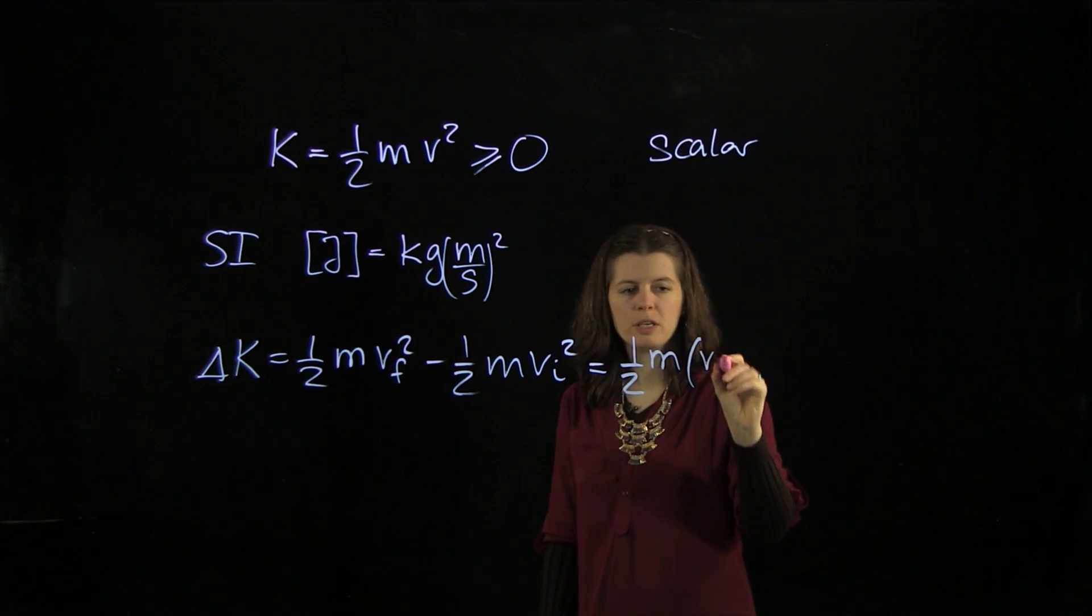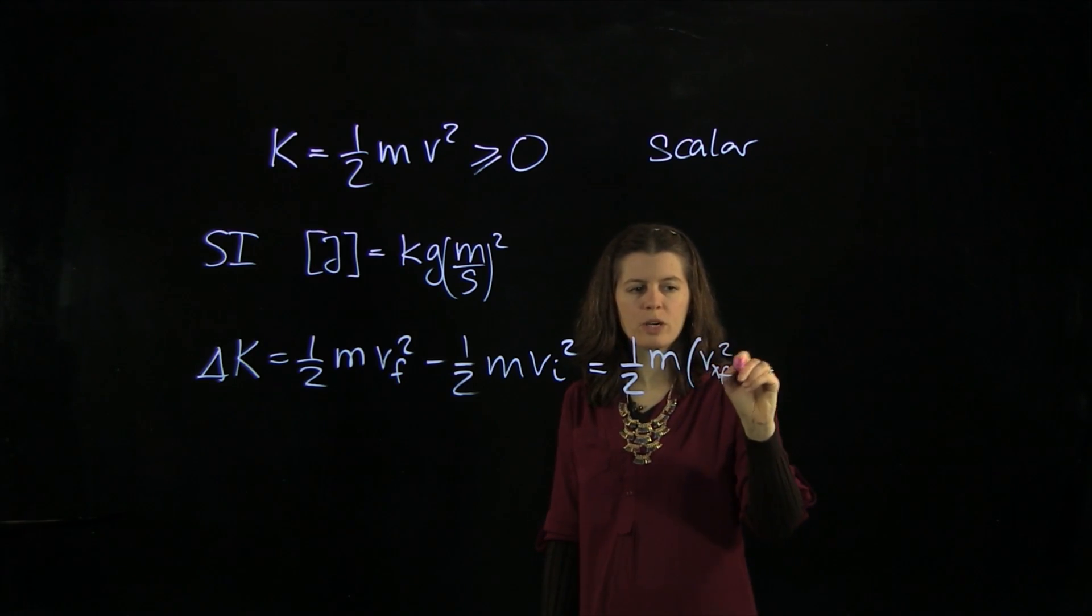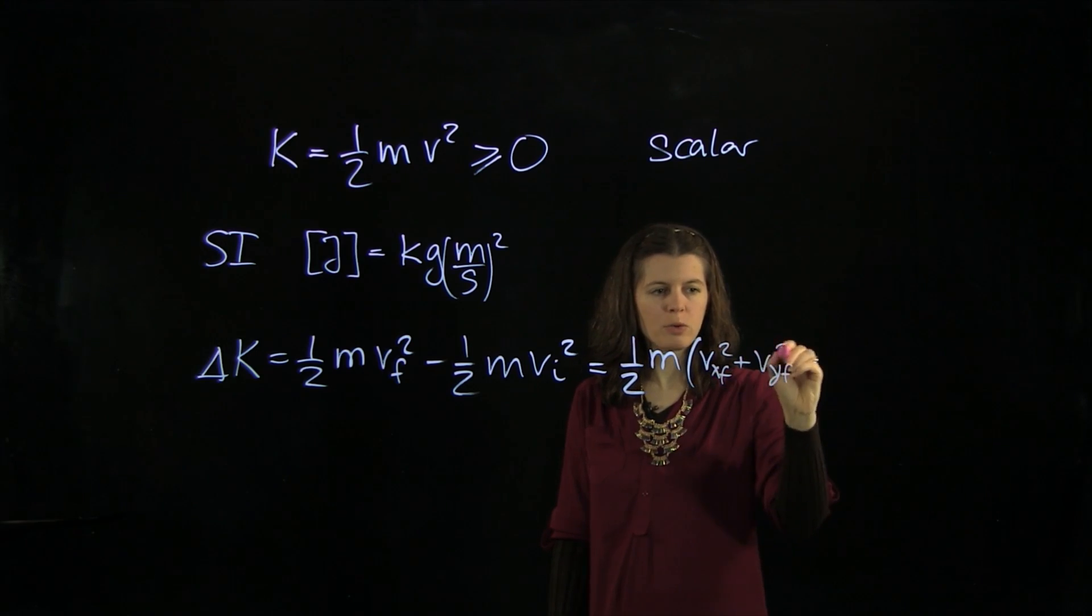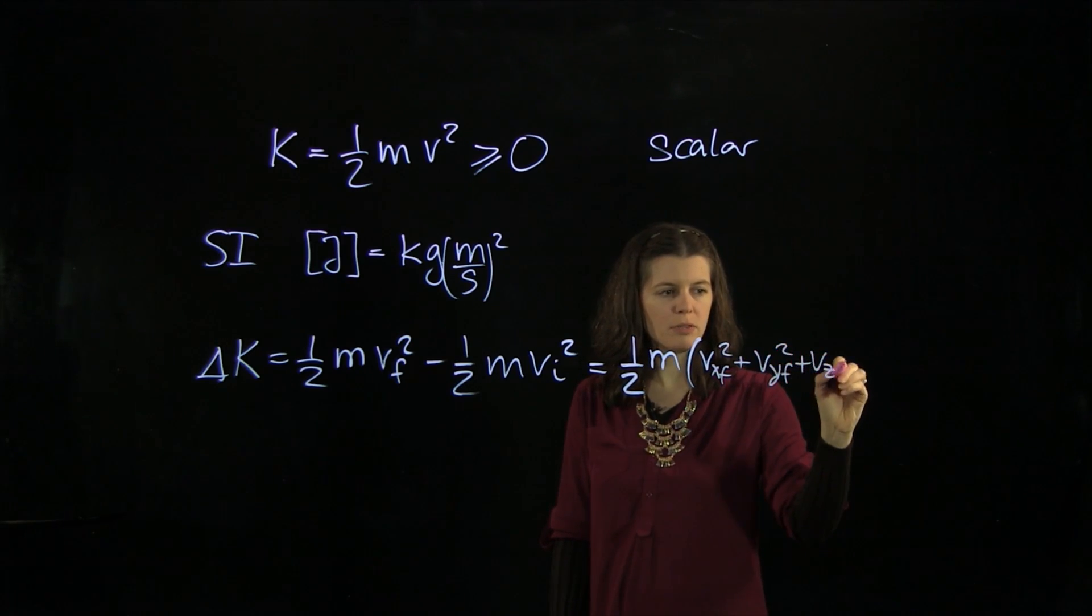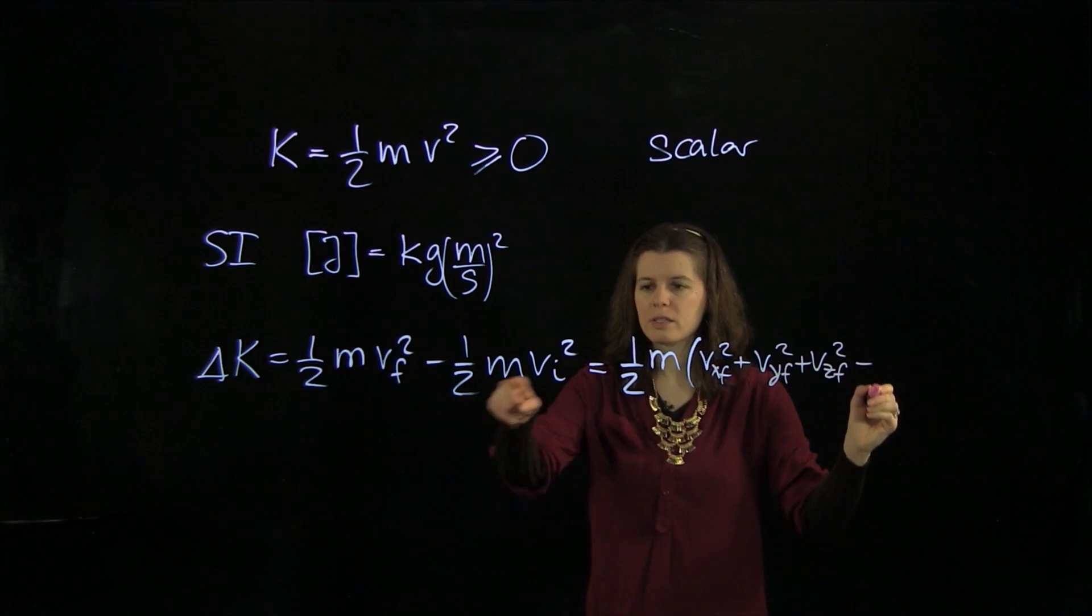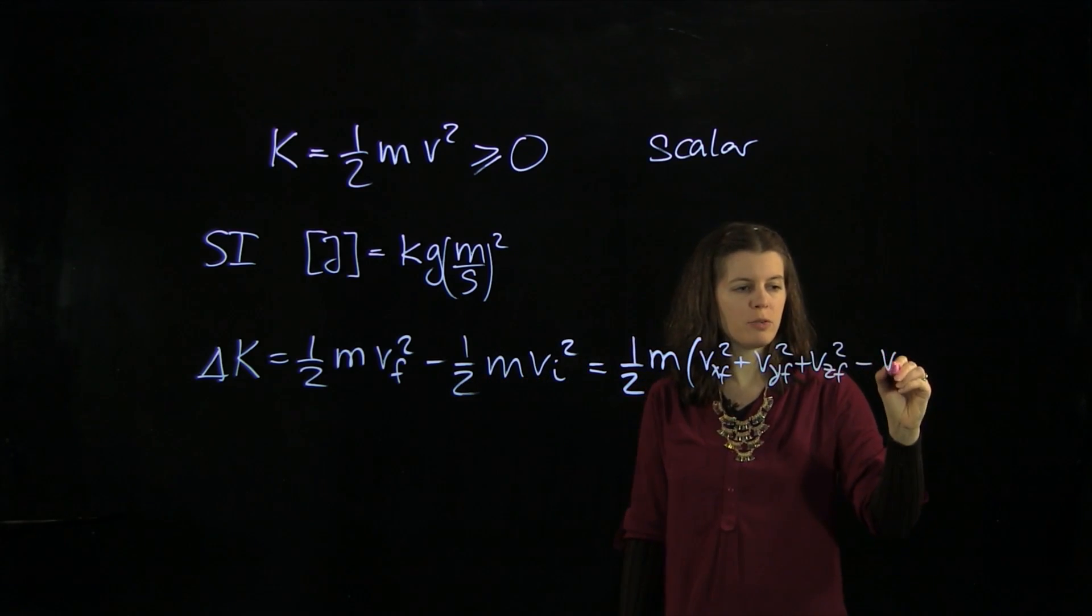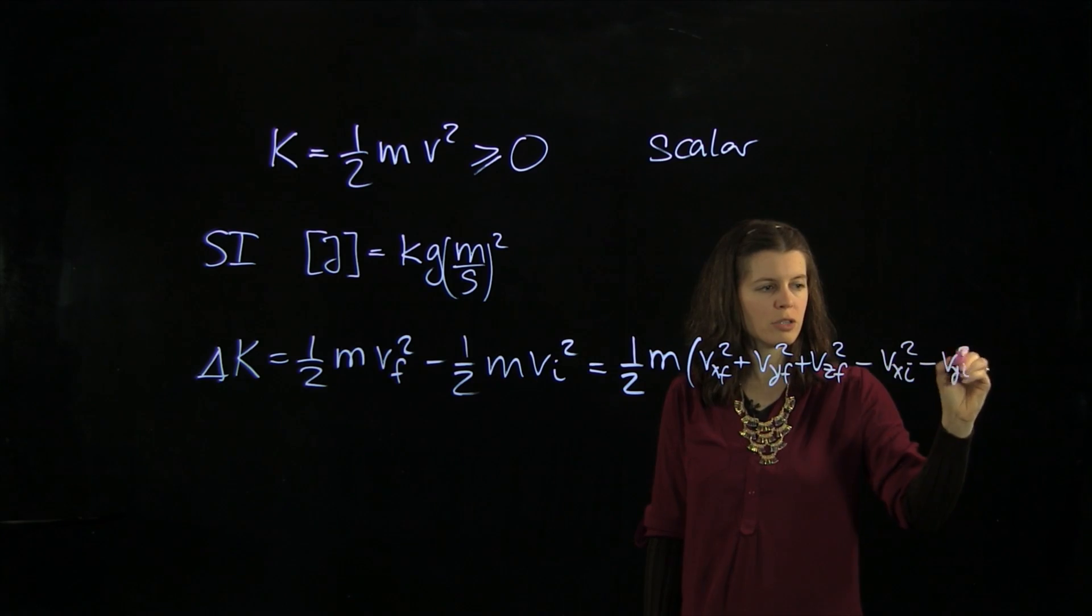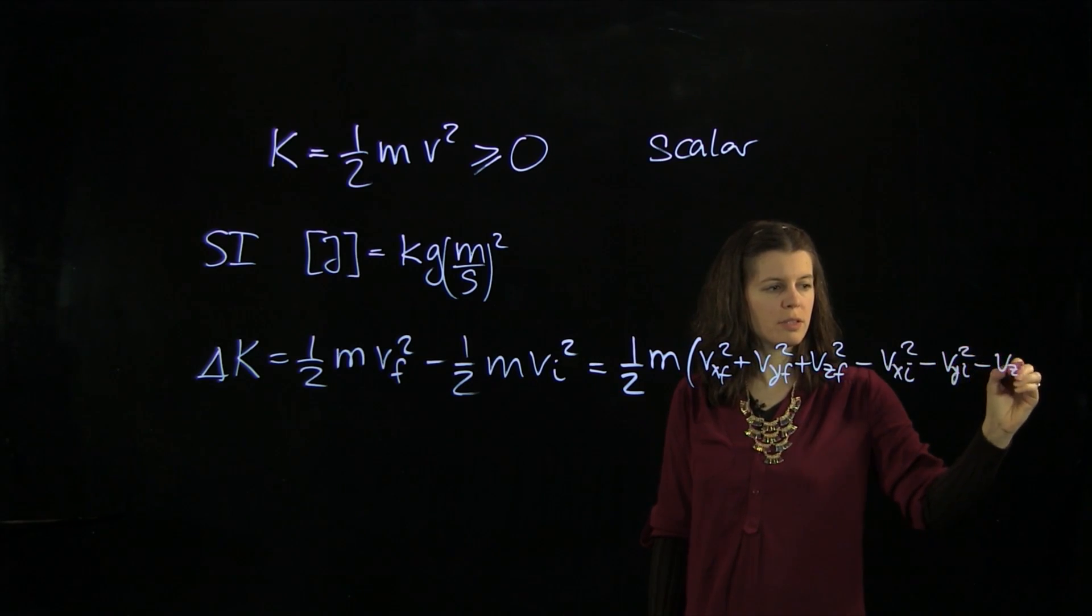And then we have v_x final squared plus v_z final squared, and then minus all the initial values, x initial, y initial, and z initial.